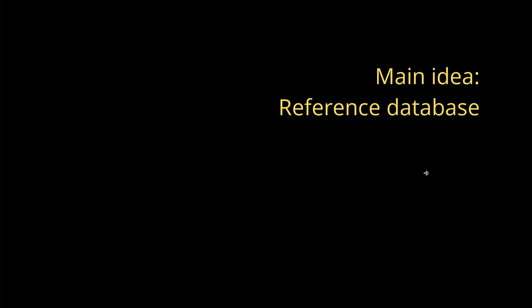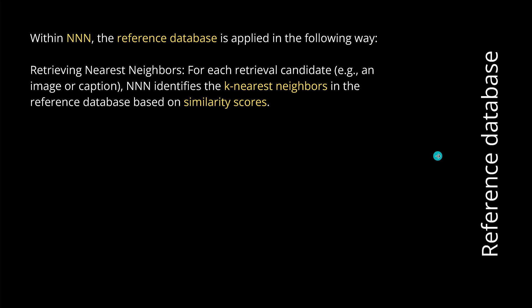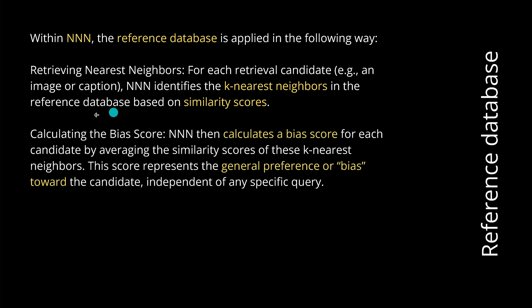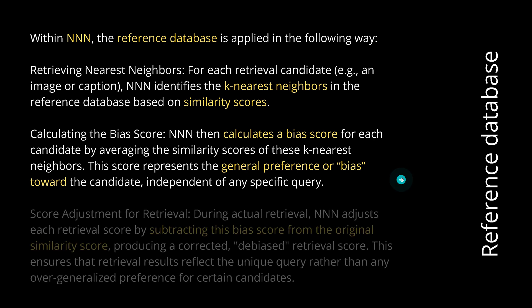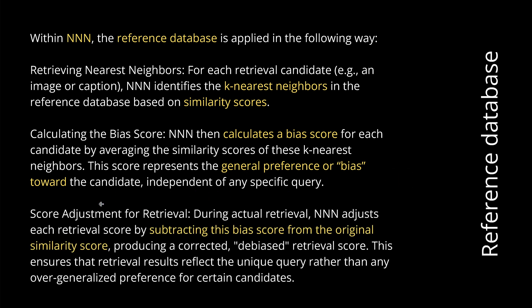The main idea is simple: a reference database. And you might say it's unbelievable that such a simple, beautiful idea has a beautiful effect on the performance of multimodal models. To apply the reference database: for each retrieval candidate — an image or a caption — NNN identifies the k nearest neighbors in the reference database based on similarity scores. We calculate the bias score for each candidate by averaging the similarity scores for these k nearest neighbors. This new score represents a general preference or bias toward that particular candidate, independent of any specific query. Then we just subtract this bias score from the original similarity score. That's it.